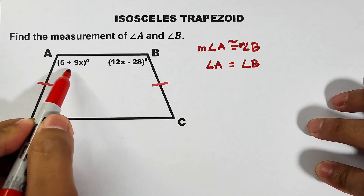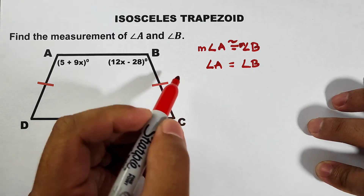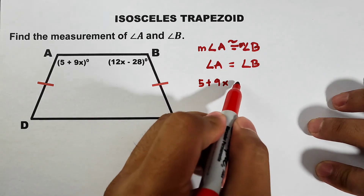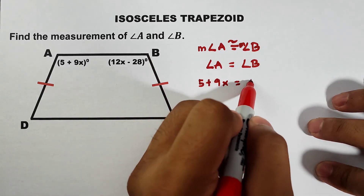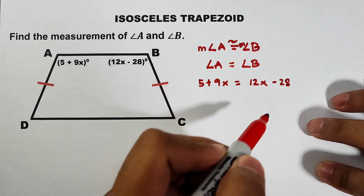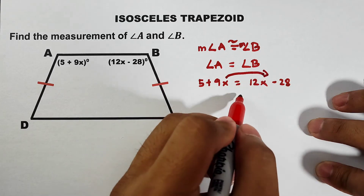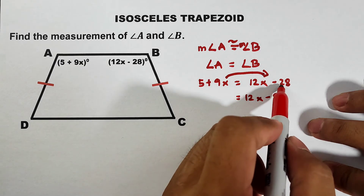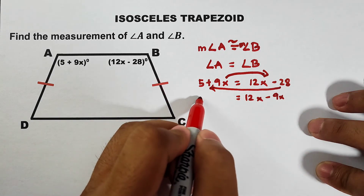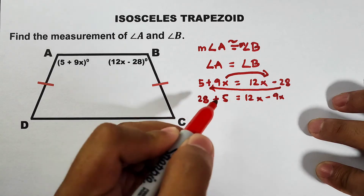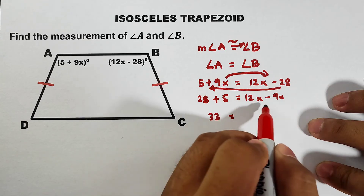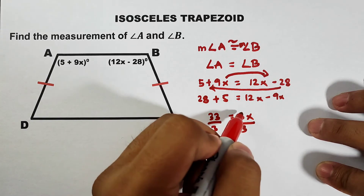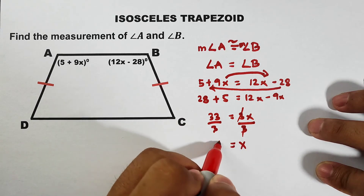To solve this problem, set them equal: 5 plus 9x equals 12x minus 28. Transpose 9x to the other side: 12x minus 9x. Transpose negative 28 to the other side: it becomes positive 28 plus 5. Add them — this gives 33, and 12x minus 9x gives 3x. To solve for x, divide both sides by 3. Cancel, cancel. Your x is equal to 11.